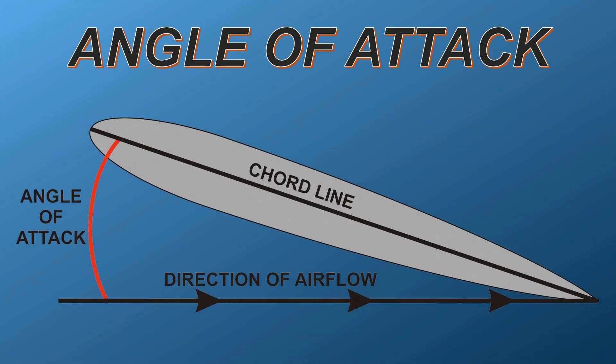At this stage it is worth reviewing the angle of attack on an aerofoil. In simple terms, an aerofoil has a line running from the front edge to the back edge of the shape — this is called the chord line. As the aerofoil flies through the air, it will meet an oncoming airflow. The angle between the direction of the airflow and the chord line is called the angle of attack. This is an important aspect of helicopter lift generation.